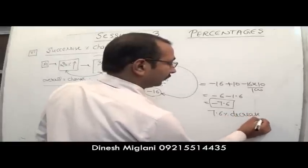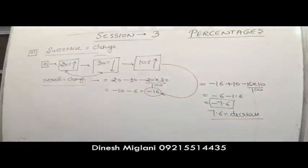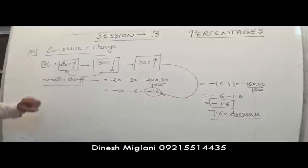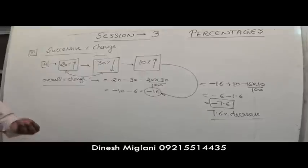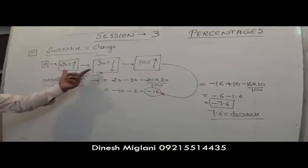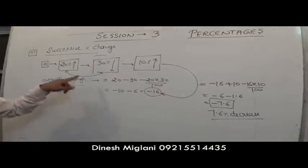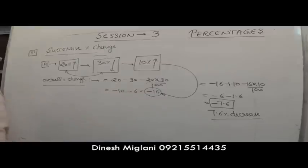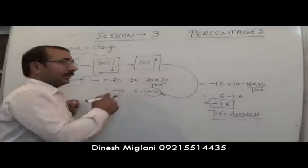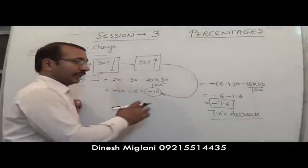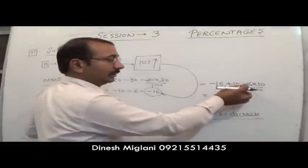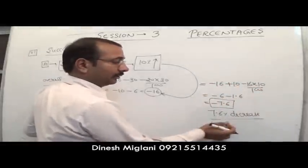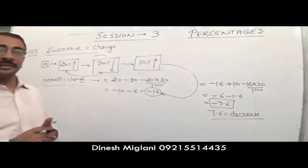So for more than two successive changes, solve step by step: first combine two values with the formula to get an intermediate result, then combine that with the third percentage. Here: first two give −16% decrease, then combining with +10% gives −7.6%, a decrease of 7.6%.